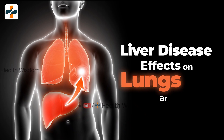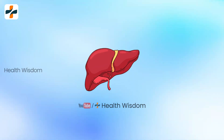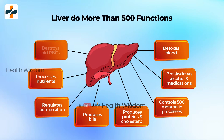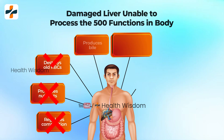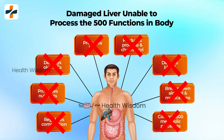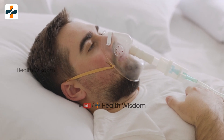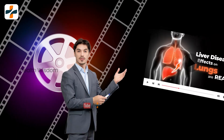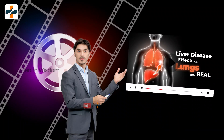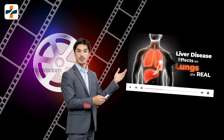Liver disease effects on lungs are real. Your liver does more than 500 functions. When the liver gets damaged, these 500 functions will not work in the body, and the patient's condition gets worse day by day. In this video, we will discuss how liver patients are suffering from other diseases associated with liver disease.